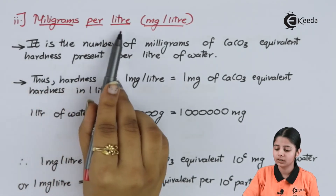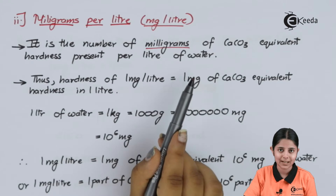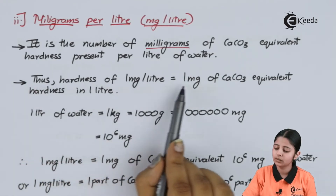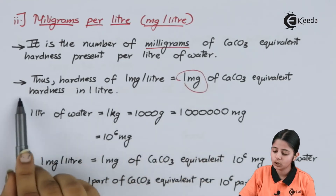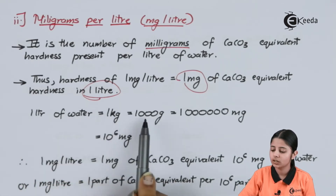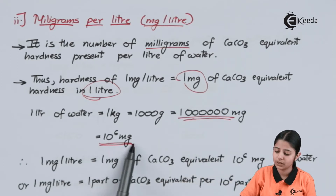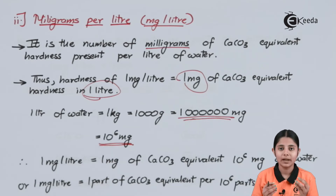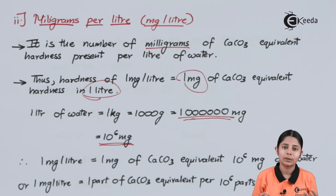The second unit is milligrams per liter (mg/L). In this, the number of milligrams of CaCO3-equivalent hardness present per liter of water is calculated. Thus, a hardness of 1 mg/L means 1 mg of CaCO3-equivalent hardness in 1 liter of water. When we calculate the ratio of mg to liter: 1 liter of water equals 1 kg, and 1 kg equals 1000 grams, which equals 10^6 milligrams. This is the reason the numeric value of PPM and mg/L are the same — parts per million works on 10^6, and mg per liter also works on the ratio of mg to liters, which is again 10^6. Both work on the same underlying principle.